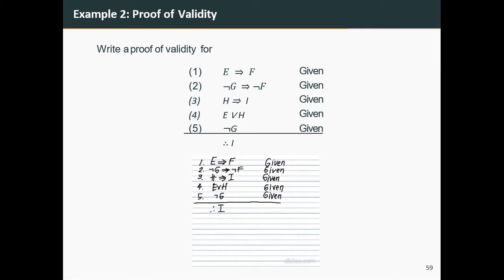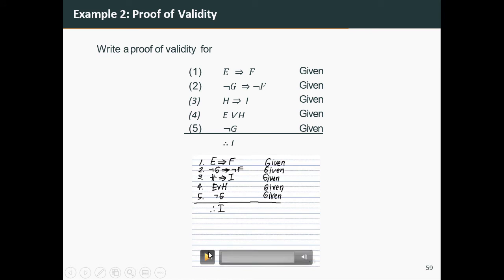Let's try our second example. We will write a proof of validity for this argument. We are given the premises: e implies f, not g implies not f, and so on. We are asked to prove i. We will use a series of rules of inference and should end up with the proposition i.